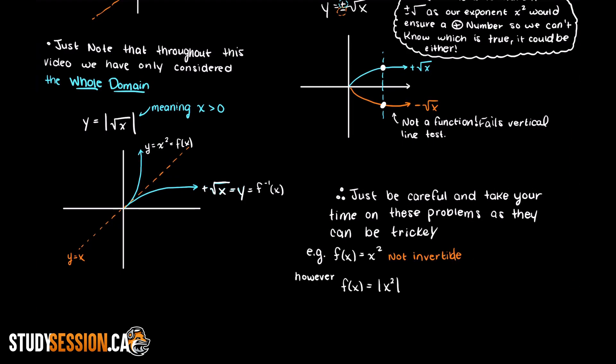So in summary, any function that fails the horizontal line test does not have an inverse function. Thank you for checking out this video, and I hope it helped your understanding of how we can use the horizontal line test to check if a function is invertible or not.